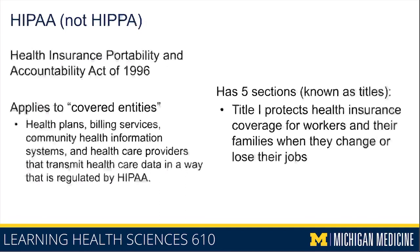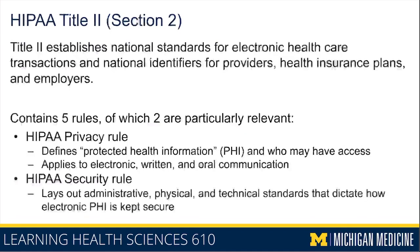HIPAA has five sections known as titles. Title I is designed to protect health insurance coverage for workers and families when they change or lose their jobs. Title II is focused on establishing national standards for electronic health care transactions and national identifiers for providers, health insurance plans, and employers — and this is the part of HIPAA that has to do with protecting the privacy and security of health information.